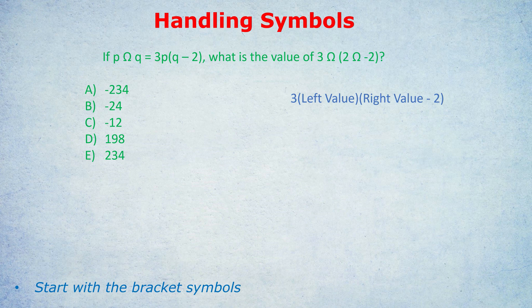Following those instructions with the values in the brackets: 2 is our left value, and (-2) is our right value. We start with the brackets. Placing 2 in as our left value and (-2) as our right value, we get 3 times 2, then in brackets, (-2) take away 2, which gets you 6 times (-4), which is negative 24.